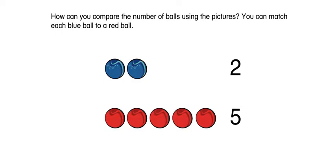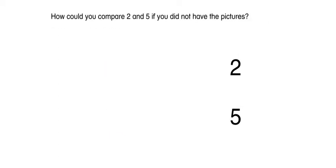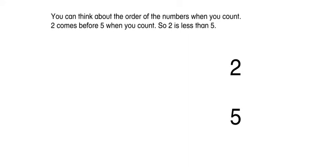How can you compare the number of balls using the pictures? You can match each blue ball to a red ball. How could you compare 2 and 5 if you did not have the pictures? You can think about the order of the numbers when you count. 2 comes before 5 when you count, so 2 is less than 5.